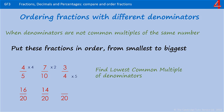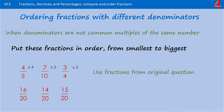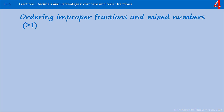In 7 tenths, we multiplied the 10 by 2 to get 20, so we're going to multiply the 7 by 2 to get 14. In 3 quarters, the denominator 4 was multiplied by 5 to get 20, so we're going to multiply the numerator 3 by 5 to get 15. Now the denominators are the same, we can easily see which is smaller. The smallest numerator is 14, so 14 twentieths — which came from 7 tenths — comes first, followed by 15 twentieths which was 3 quarters, and finally 16 twentieths which was 4 fifths. There's a separate video that looks at ordering and comparing improper fractions and mixed numbers.